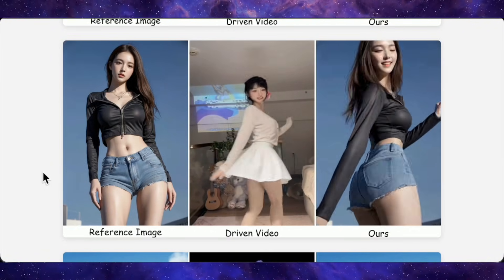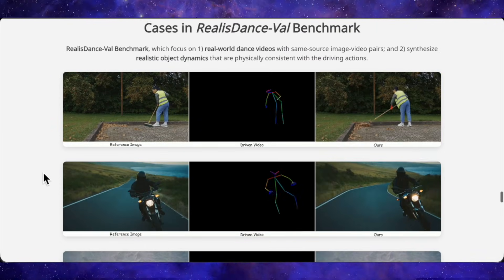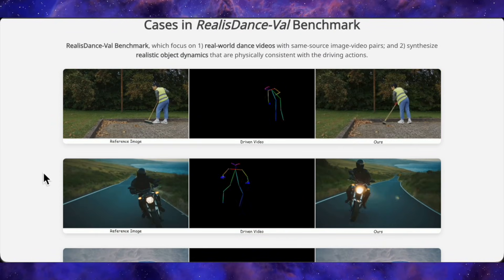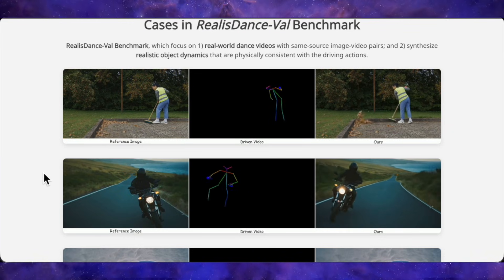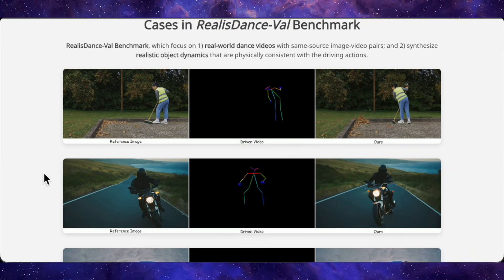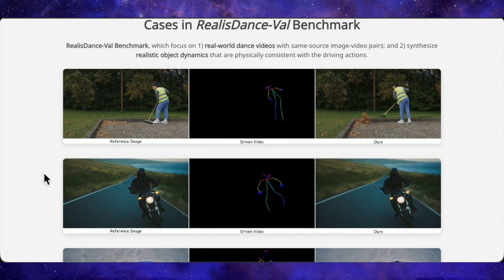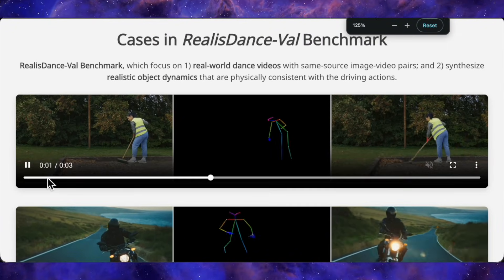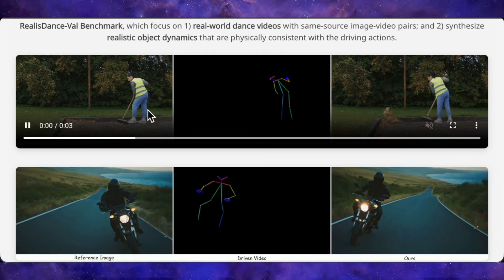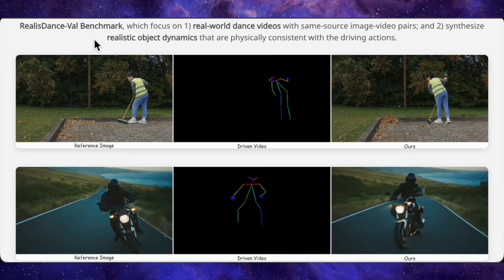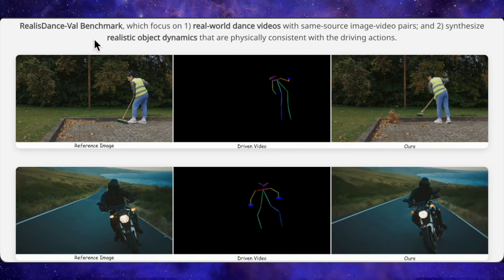It also does something that a lot of these models completely fail at: human-object interactions driven just by pose or skeleton cues. The authors introduce a benchmark called X-Dance where they intentionally pair mismatched reference images and driving videos — different body types, anime characters, half-body crops, plus motion blur and occlusions — to stress test things like spatial misalignment and start gap transitions, and that's where competing models usually fall apart.